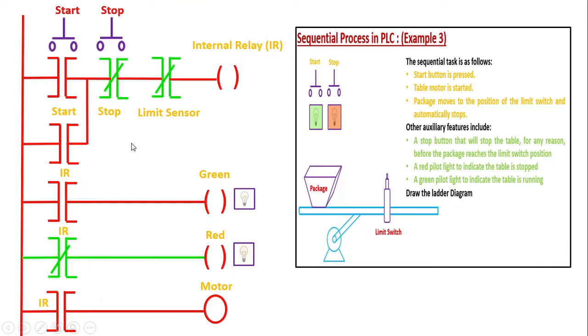So if you carefully observe, how do we analyze these type of ladder diagrams? So how do we justify this is the right ladder diagram for the sequential process that is given according to the question?